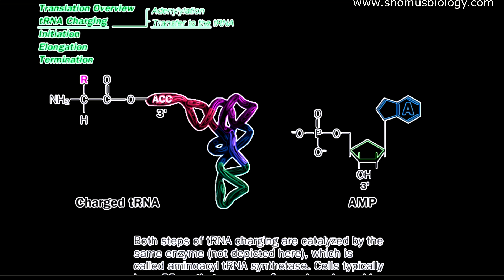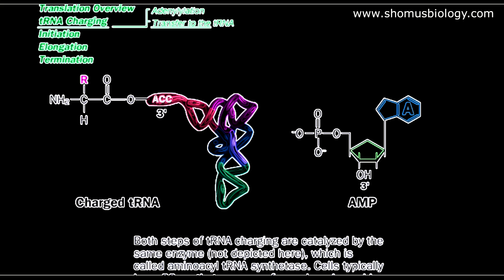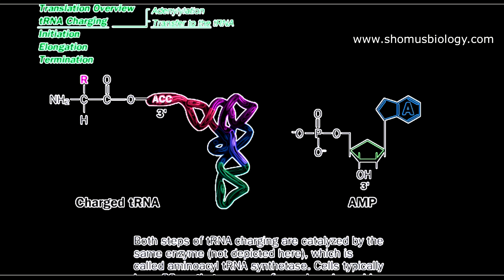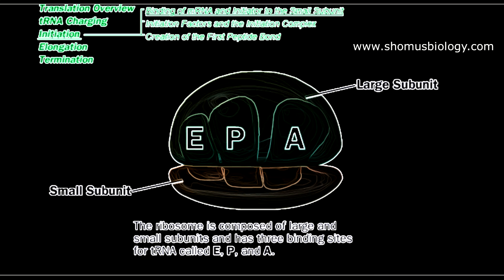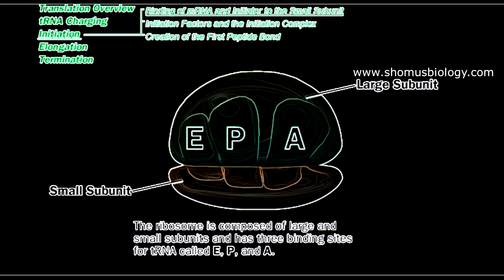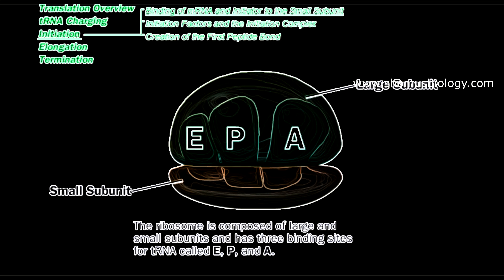Once charging is understood, we move on to the steps of protein synthesis in prokaryotes: initiation, elongation, and termination. The ribosome has a large subunit and small subunit, with E site, P site, and A site integrated into it. E means exit, P means peptidyl, and A means aminoacyl tRNA attachment site.